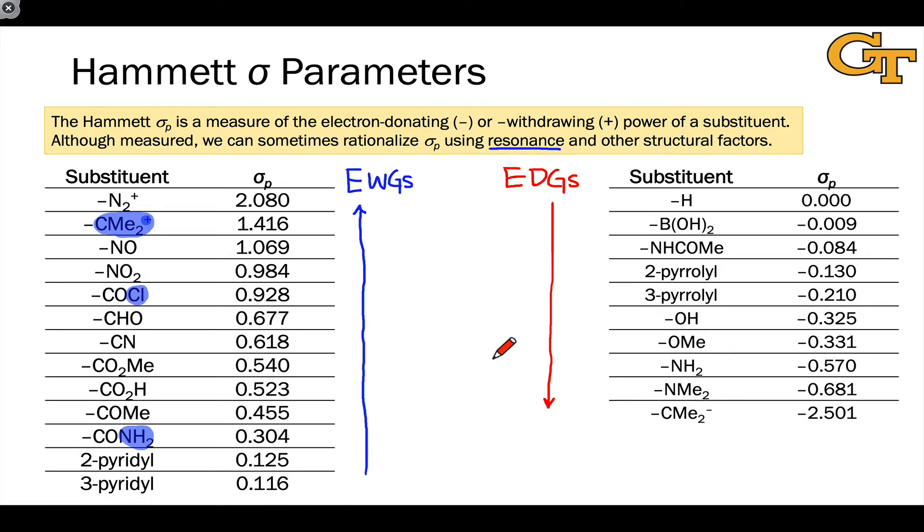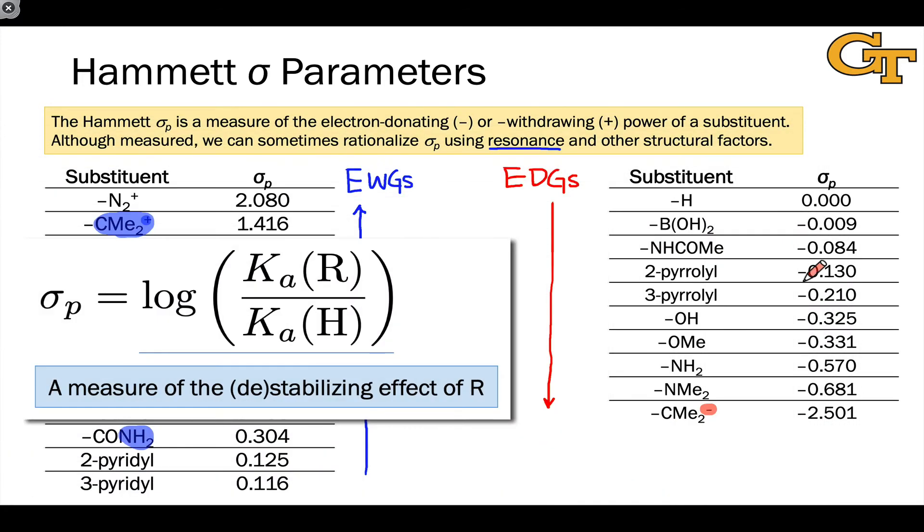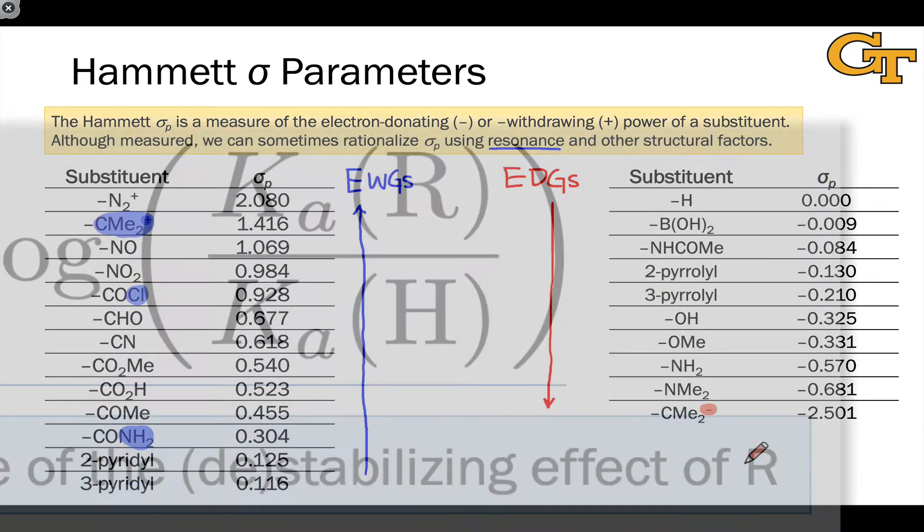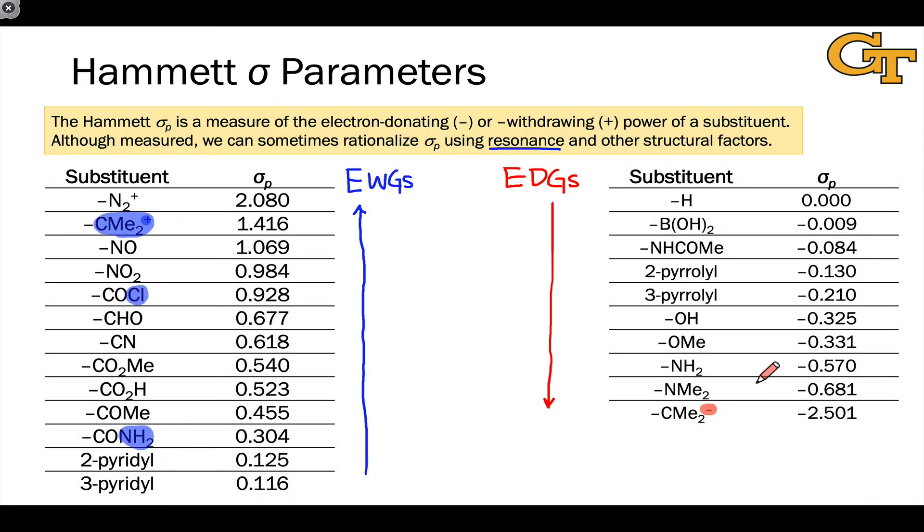Hydrogen, remember, we've defined as having a sigma p value of zero exactly. It is our standard. Here, the strength of the electron donating group increases as we move down. For example, among the strongest electron donating groups that we can imagine is a carbanion. The CME2 minus carbanion is among the strongest electron donating groups. We can see that for the donating groups, the sigma p value is negative, and this makes sense given how we've defined sigma p.